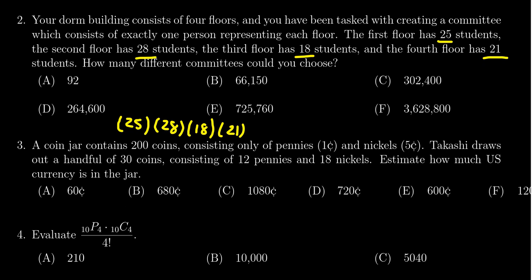Feel free to use a calculator to assist you on this one, but if you take 25 times 28 times 18 times 21, you end up with 264,600. So the correct answer would be D.